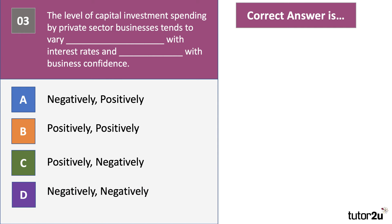Question three: the level of investment spending by private sector businesses tends to vary something with interest rates and something with business confidence. This is testing negative and positive relationships between two variables. The answer is A — investment spending tends to vary negatively with interest rates and positively with confidence. As interest rates go down, planned investment tends to go up, and as business confidence goes up, so too does capital investment.